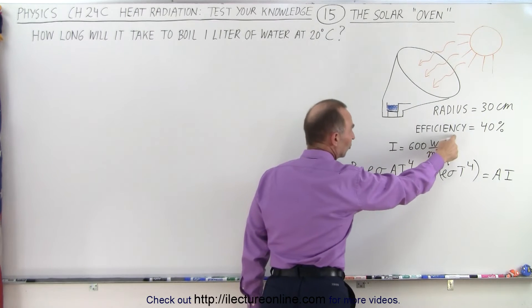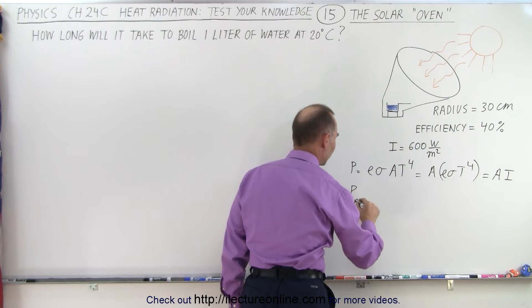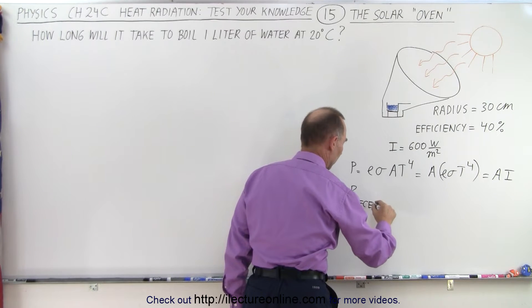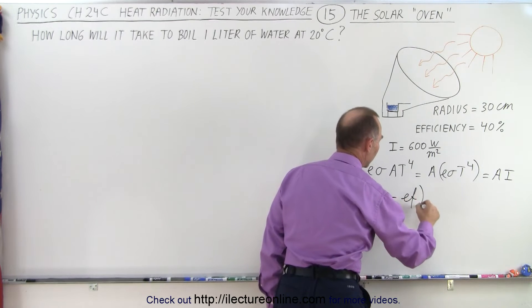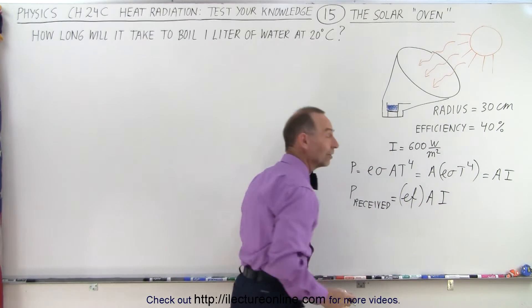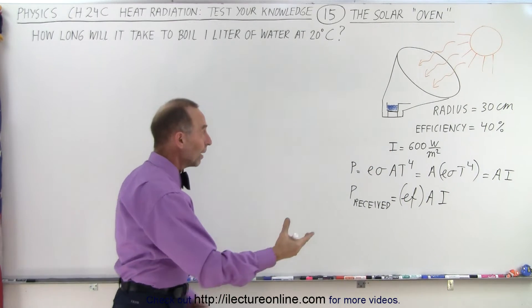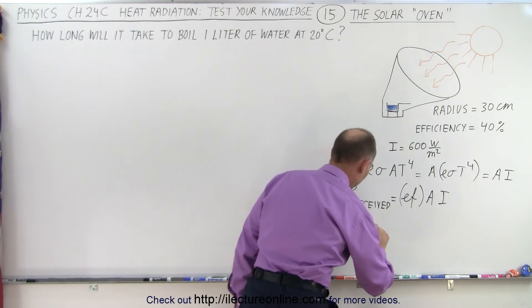And so we know the intensity of the sunlight when it reaches the oven. We know the area because we know the radius of the opening. And then realize that that efficiency is 40%. Then the power received by the water is going to be equal to the efficiency multiplied times the area multiplied times the intensity.